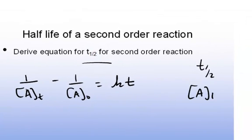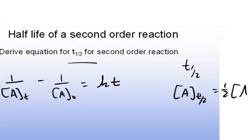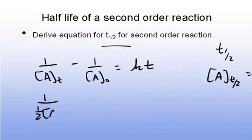We know that the concentration is equal to one-half the initial concentration, so we can plug that in. 1/(0.5[A]₀) minus 1/[A]₀ equals kt₁/₂.